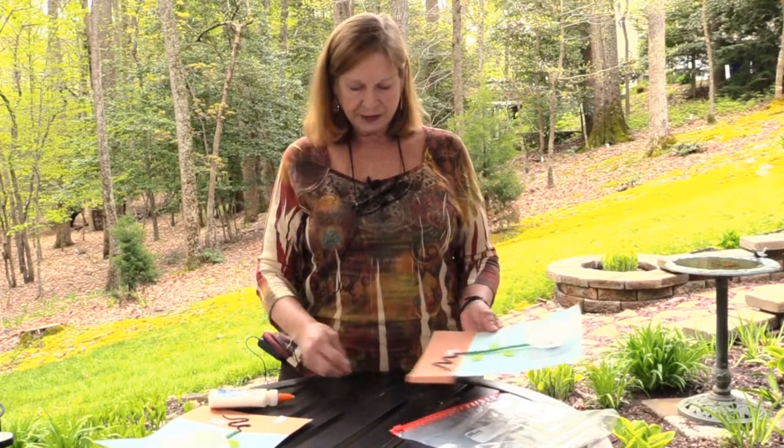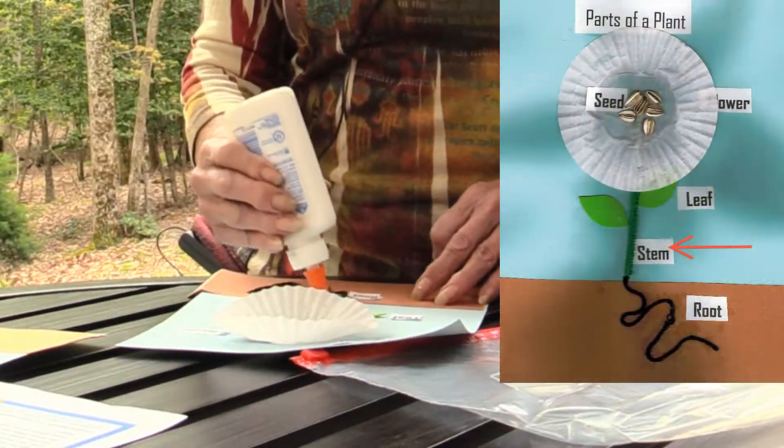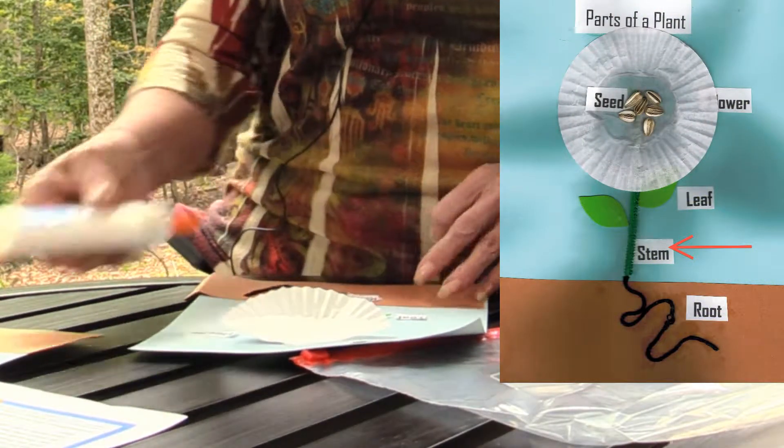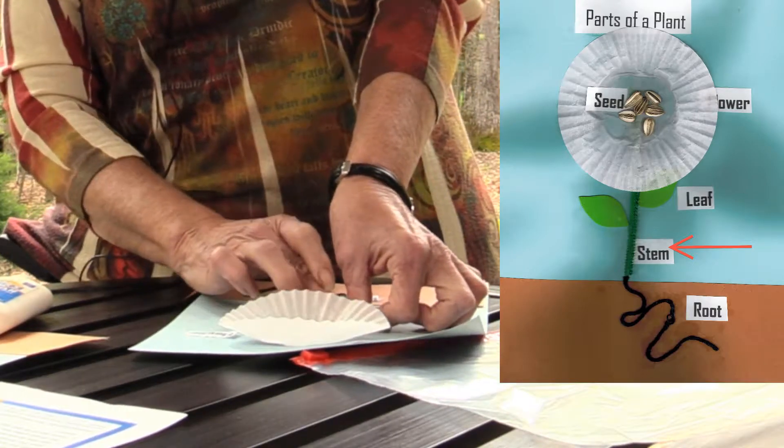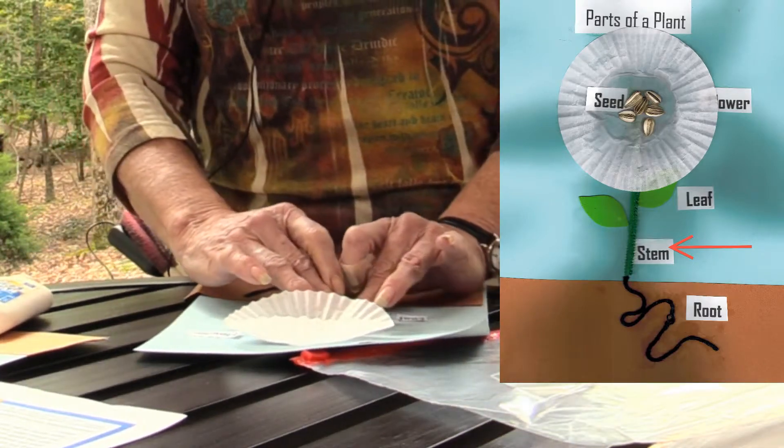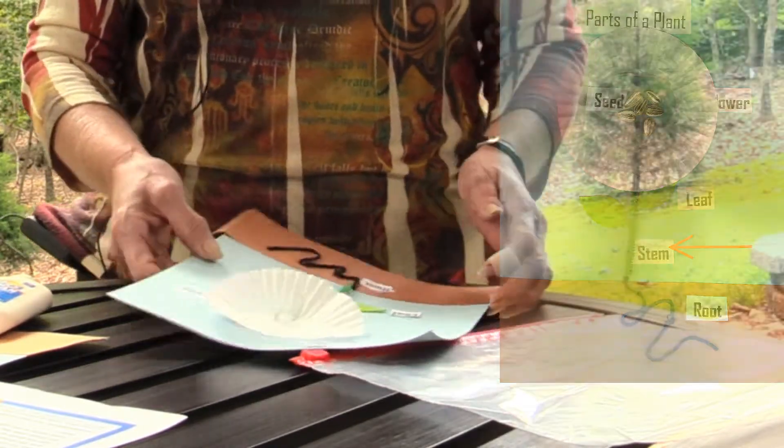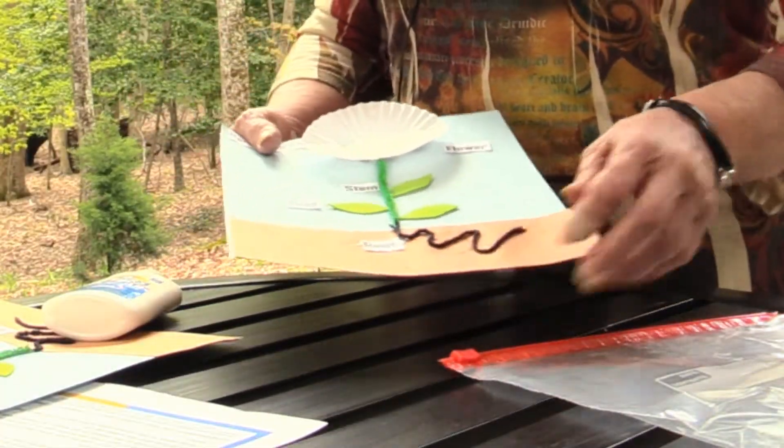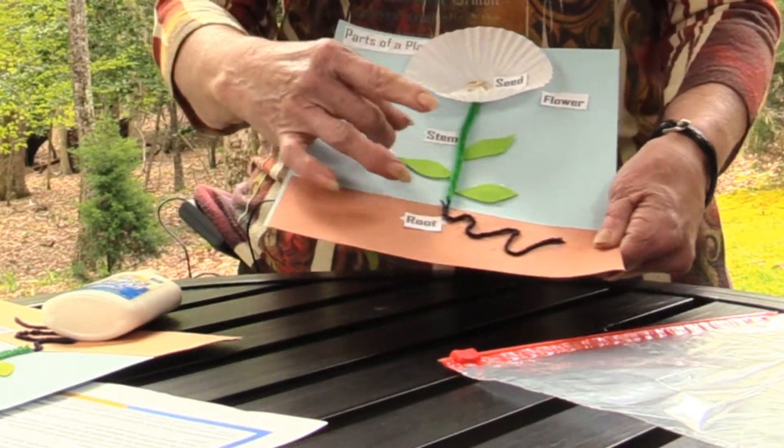And finally our root. Are we missing anything? I think so. We did not label the stem. Again, that's very important for the plant because that's how it gets its nutrients. The nutrients come from the soil into the root and come up the stem. The leaves are produced.